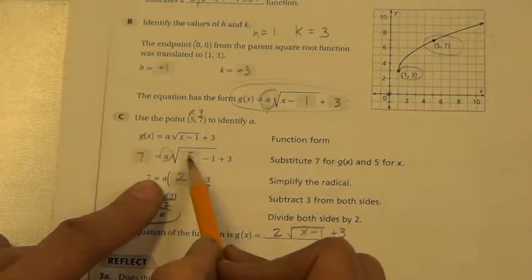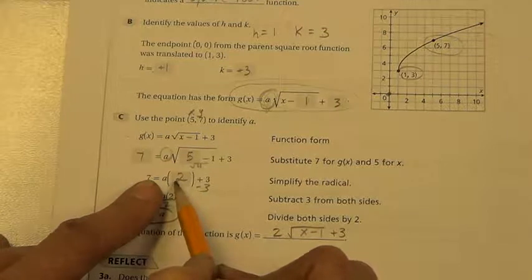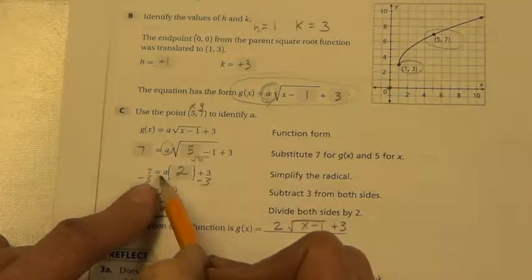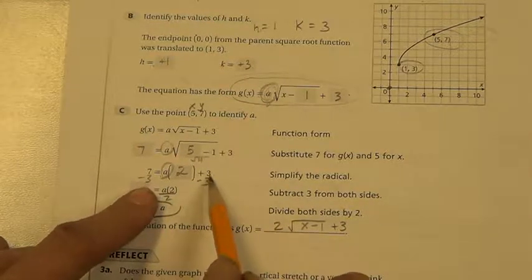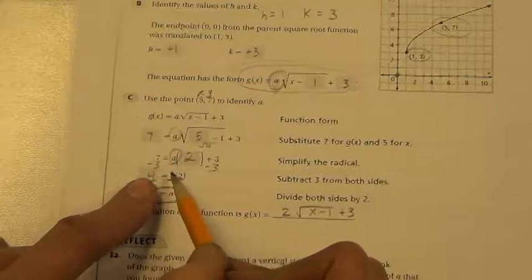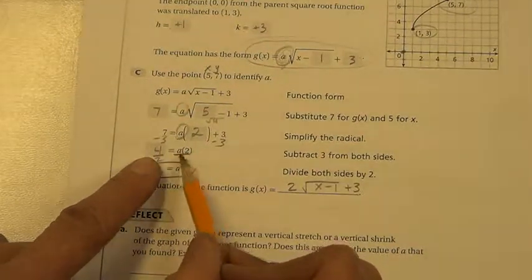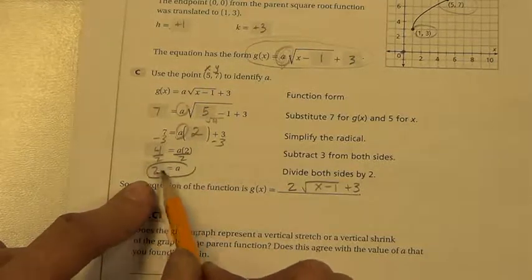And now to get the a alone, circle him. What's being added to him is a 3, so we subtract 3 on both sides. Then we get 4, and we have a times 2, so we divide by 2 on each side. We find that 2 equals a.